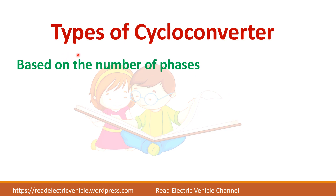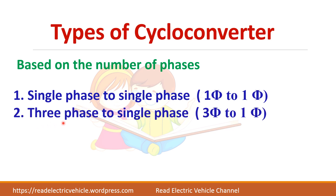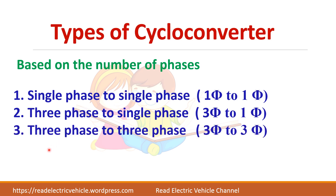The types of cycloconverter based on the number of phases on the input and output side: if you have a single-phase input you can get a single-phase output; three-phase input can be converted to a single-phase output; and three-phase to three-phase conversion is also possible.